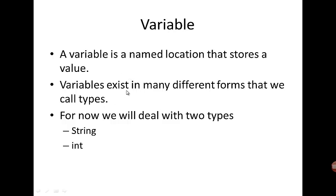Variables exist in many different forms that we call types. For right now I'm just going to talk about two of the several types in Java programming: strings and ints. Strings are characters like we worked with last week, and ints are whole numbers. They are not negative numbers and they are not decimal numbers — they are whole numbers: one, two, three, four, five.